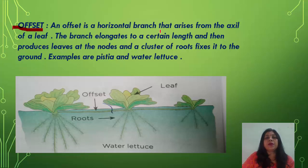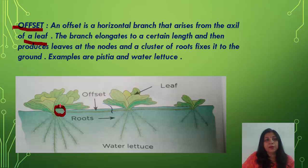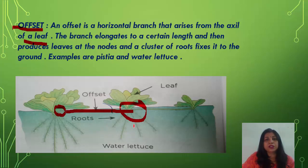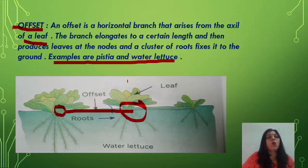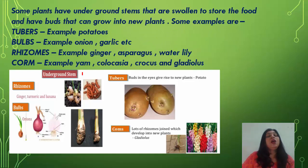An offset is a horizontal branch that arises from the axil of a leaf. The branch elongates to a certain length, then produces leaves at the nodes, and a cluster of roots fixes it to the ground. Examples are Pistia and water lettuce.